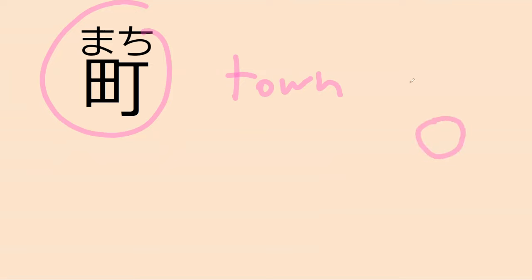Our next word is machi — do you know what it means? — Machi — a village? — Town is probably the better word. This word is used when you mean like a city but not a huge one like New York. It's a small city. A village would be mura — you need like 4,000 and under in population for it to be mura. Once you get above that it becomes machi.